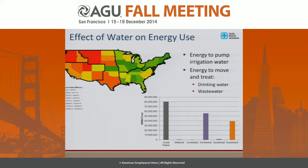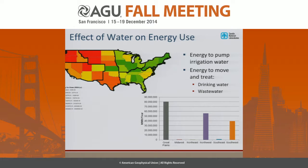We see a very complete change in the patterns when we start talking about the effect of water — our choices about water — and its effect on energy use. Here we're talking about the energy to pump water for irrigation, surface and groundwater, and the energy to move and treat drinking water and wastewater. This is in megawatt hours per year, and you can see that it's much more concentrated — much higher here in the west than in the east — largely due to pumping for irrigation. So most of our irrigation is out west, a very different pattern than what we saw before.